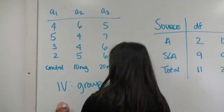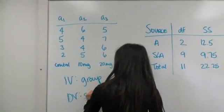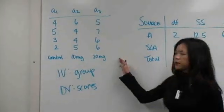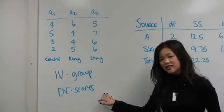Our dependent variable is we're going to measure their scores on a test, and we're hypothesizing that perhaps the drug is going to help them do better on a statistics test.